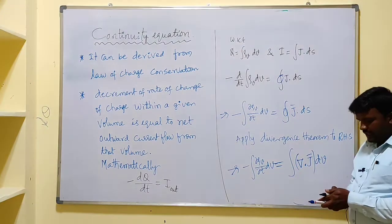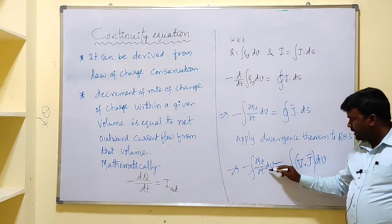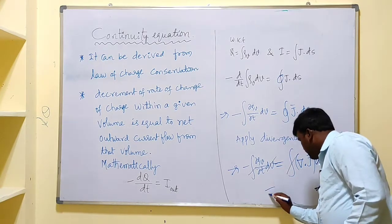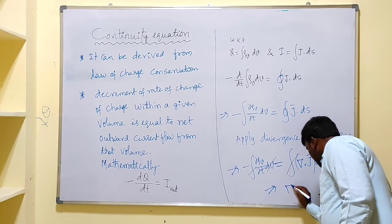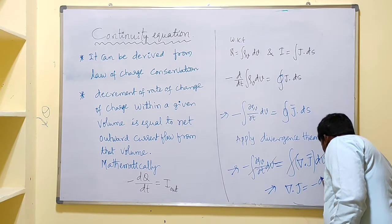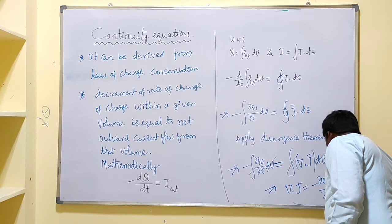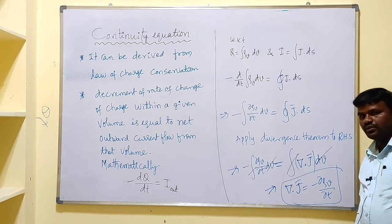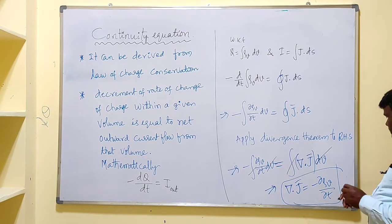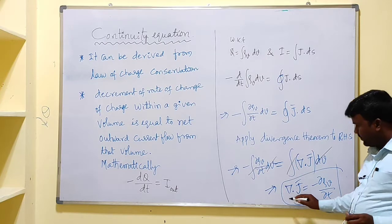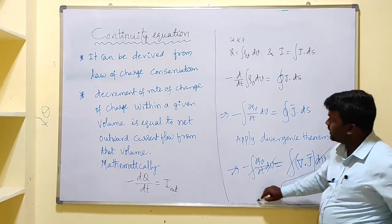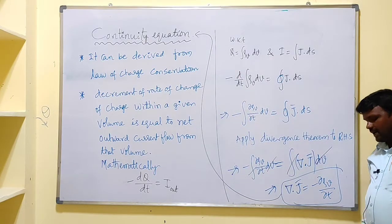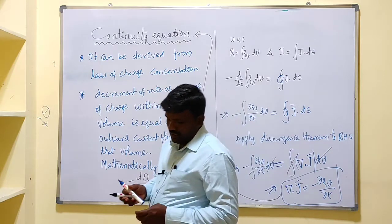Since both sides are volume integrals, the integrals cancel out. This implies that ∇·J = −∂ρv/∂t. This equation is called the continuity equation. So: ∇·J = −∂ρv/∂t is the continuity equation.